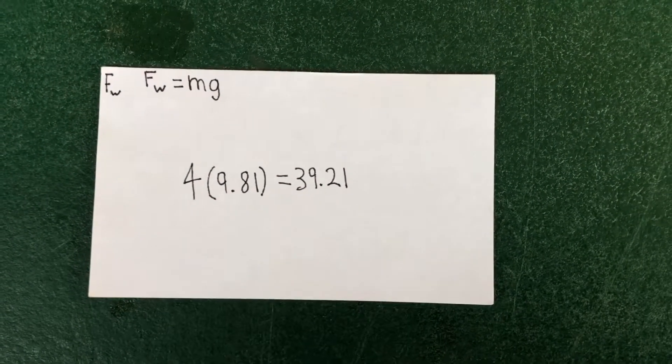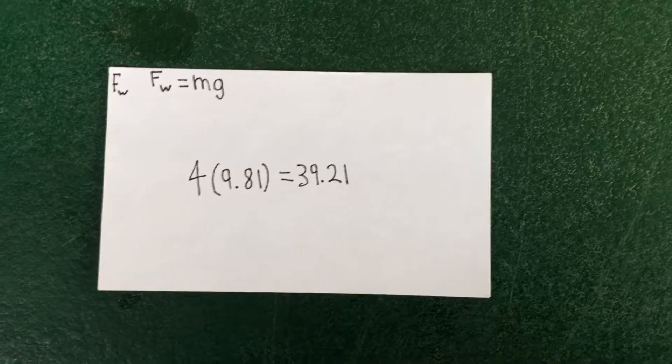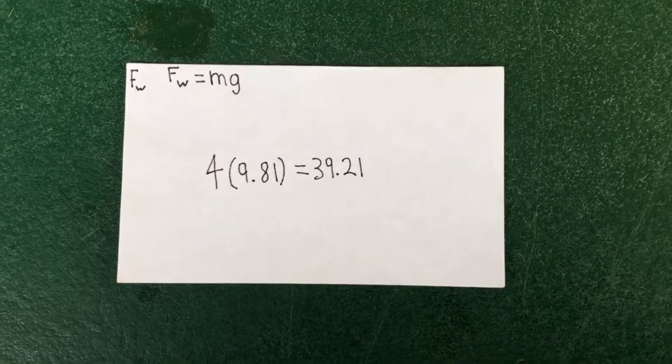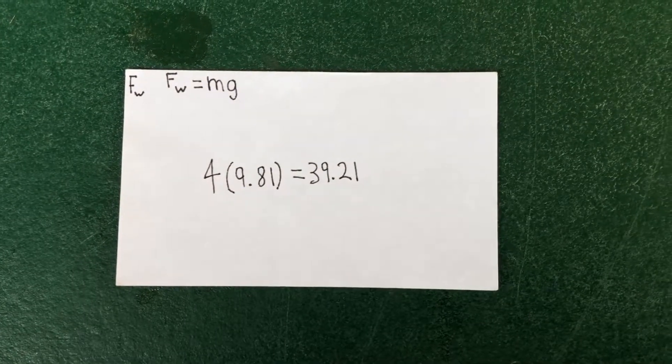To find the force of weight, we multiplied the mass by gravity. Gravity is a constant of 9.81, and the shot put weighed 4 kilograms. Our force of weight is 39.21 Newtons.